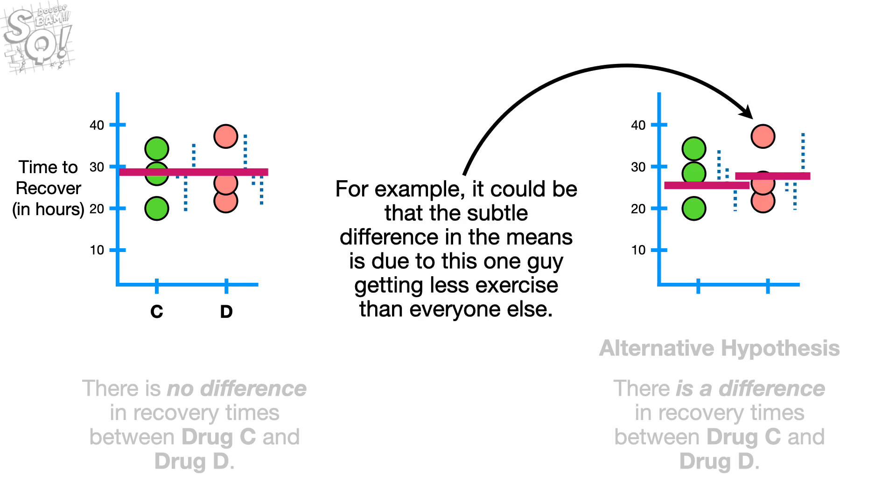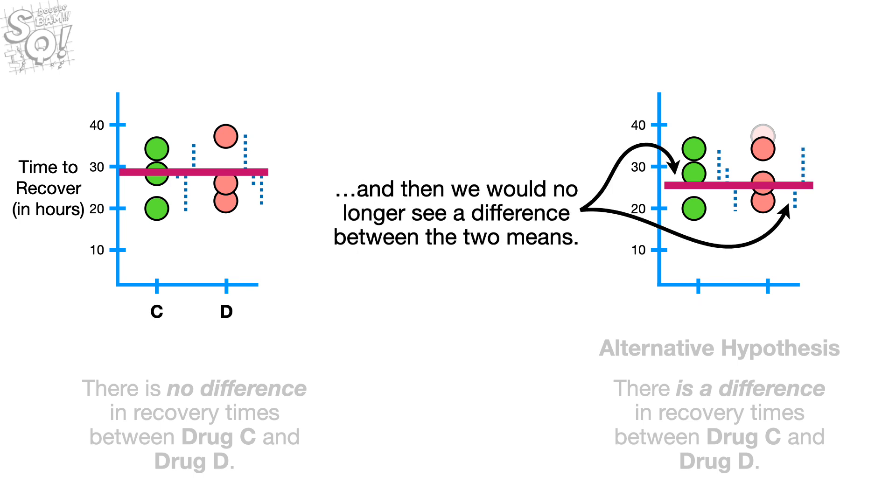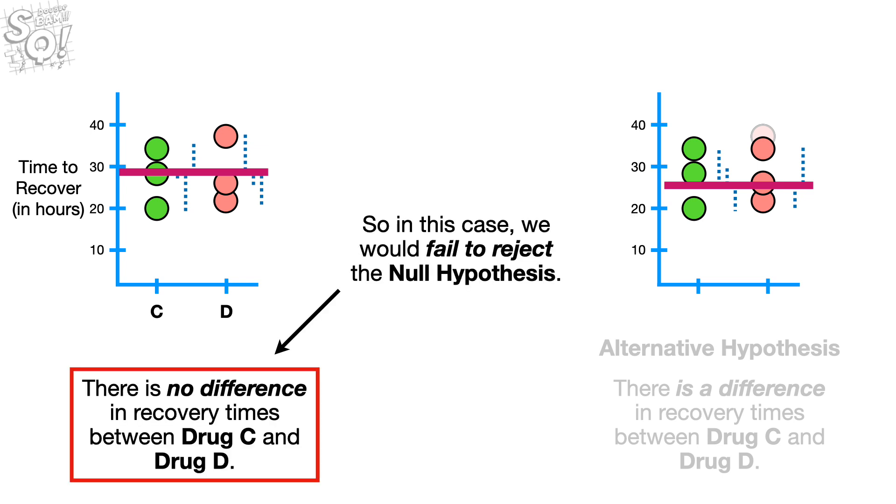For example, it could be that the subtle difference in the means is due to this one guy getting less exercise than everyone else. If he had exercised just a little bit more, he might have recovered from the illness a little faster. And then we would no longer see a difference between the two means. So in this case, we would fail to reject the Null Hypothesis.